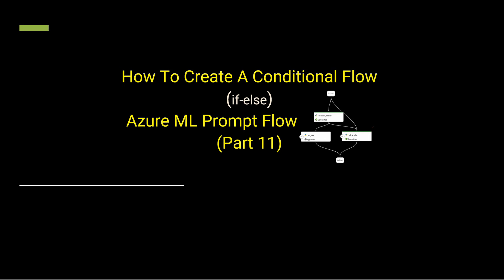Hello everyone, welcome to another episode of my series Azure ML Prompt Flow. In this video I will explain how you can execute your flow conditionally — based on certain conditions you want to execute one node, and based on other conditions you want to execute another node. So how you can perform this if-else kind of action — that's what we are going to see today.